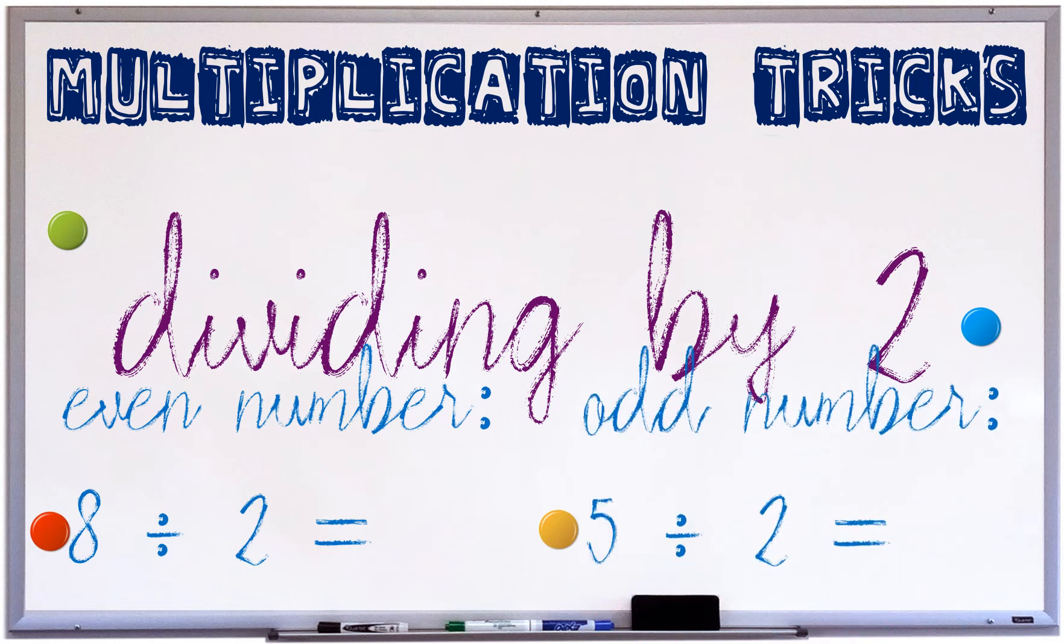And an odd number is the other numbers: 1, 3, 5, 7, 9. I chose 5. 5 divided by 2 is 2 and a half. Oh, there is one left. So which one has leftovers? When you divide 2 with an even number or divide 2 with an odd number?